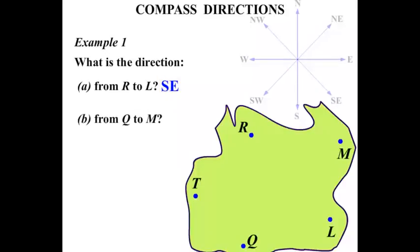From Q to M. Well, we're going from Q and we're going to the direction towards M. So that arrow, we repeat that. We can see that it's going in the North-Easterly direction. So NE, North East.